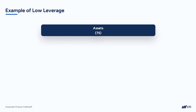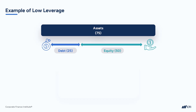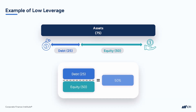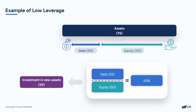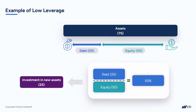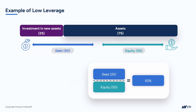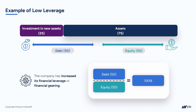Let's imagine a business that has assets of 75 and funds those assets with 50 in equity funding and 25 in debt funding. Comparing the amount of debt funding to equity funding, we can see that debt funding is 50% of the equity funding amount. Now let's imagine the company wants to increase its assets by 25 and doesn't want to ask shareholders for more money — it could go to the bank and get more debt funding. All the funding for the 25 in new assets comes from debt. This means our assets are now 100, with debt funding of 50 and equity funding of 50. The ratio of debt to equity funding has risen from 50% to 100%. We say that the company has increased its financial leverage or financial gearing.